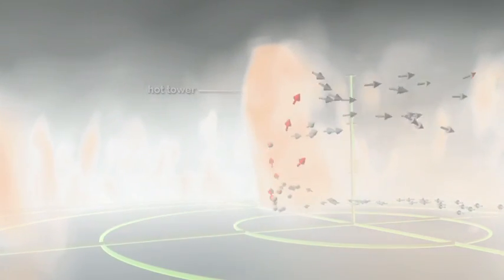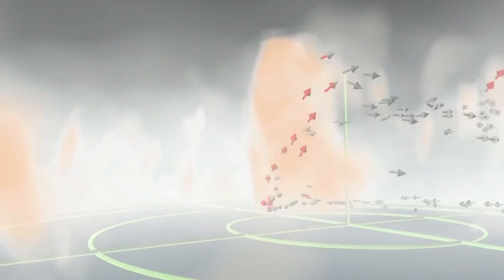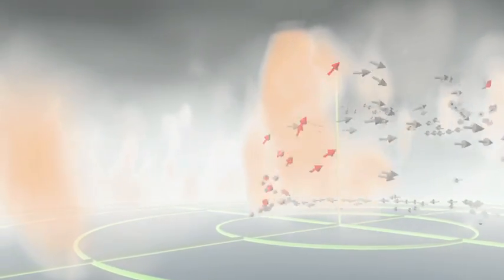The arrows show winds swirling near the surface where energy is picked up from the warm ocean. Some of this air moves into the hot tower and rises rapidly, boosting the hurricane's strength.